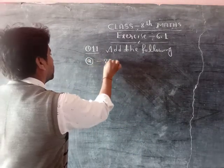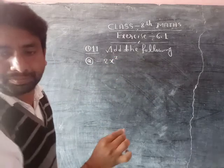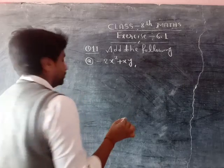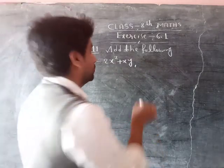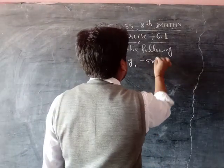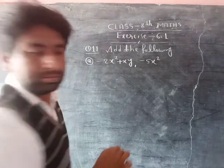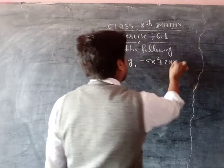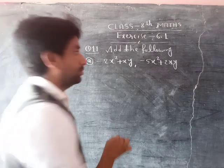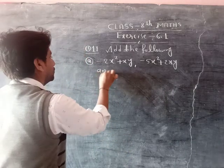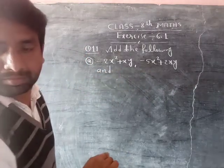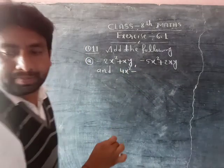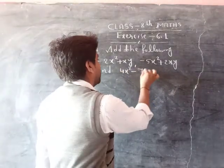Minus 2x square, plus xy, minus 5x square, plus 2x square, minus 4x square, minus 7x, minus 5x.